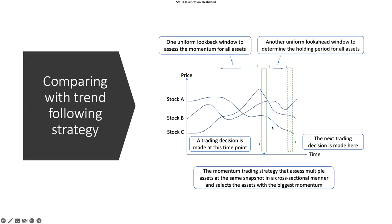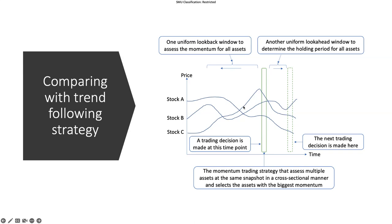Let's look at the comparison with trend following graphically. Here, the x-axis is time and the y-axis is price, and I'm plotting three stocks in terms of their price movements. At a given time point where I want to make a trading decision, using the momentum training strategy I involve two windows. The first is the look-back window, which is the same size for all stocks — that's why it's uniform — and this is used to assess relative performance using a specific metric, such as the cumulative return for the past six months. So under this metric, I assess their relative performance; this is relative momentum.